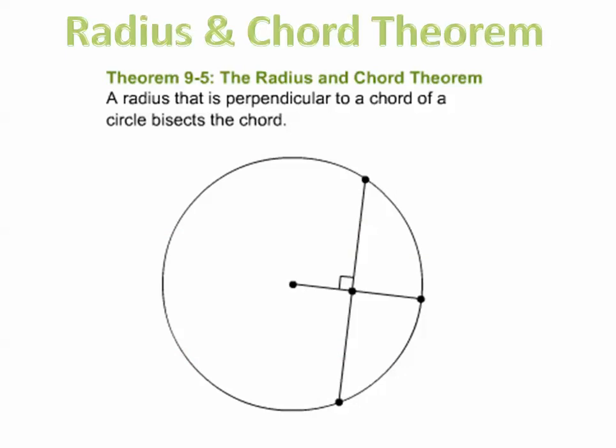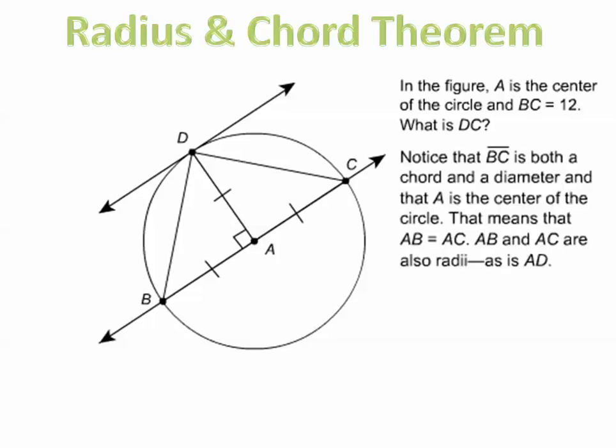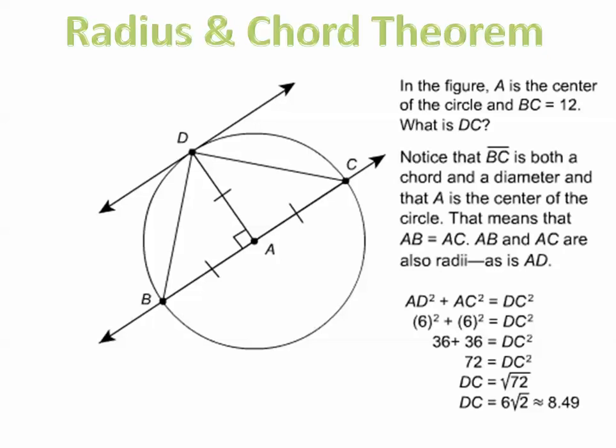The radius and chord theorem says a radius that is perpendicular to a chord of a circle also bisects that chord — it cuts the chord exactly in half. In this figure, A is the center of the circle and segment BC equals 12. BC is both a chord and a diameter, so AB equals AC, and both are radii, as is AD. Since there's a right angle, you use the Pythagorean theorem to find the measure of DC. This problem was covered in detail in one of the last two lessons.